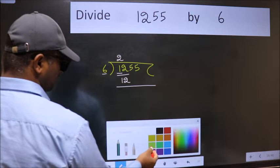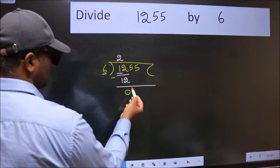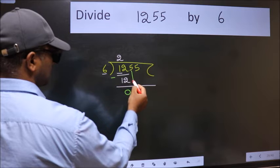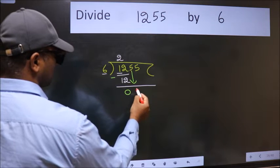Now we should subtract. We get 0. After this, bring down the beside number. So, 5 down.